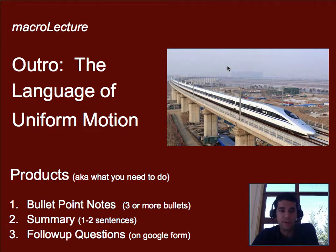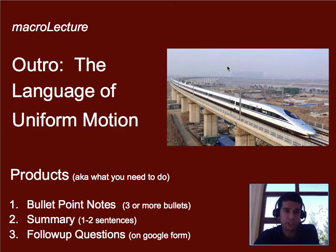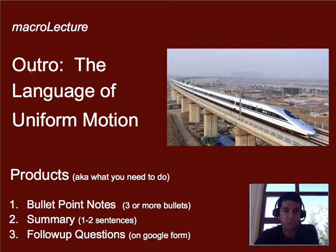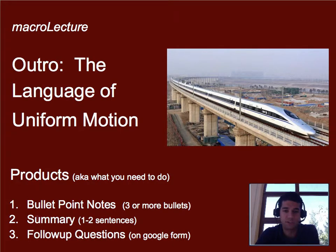Hello for the last time for this series of lectures. This is the last micro lecture of the collection — I call it a macro lecture just because it's big picture, but it's still going to be the same length. This one is the outro, so my goal is to summarize what we've talked about and what you've learned. You still have the same products: three bullet points, one to two sentence summary, and the follow-up question.